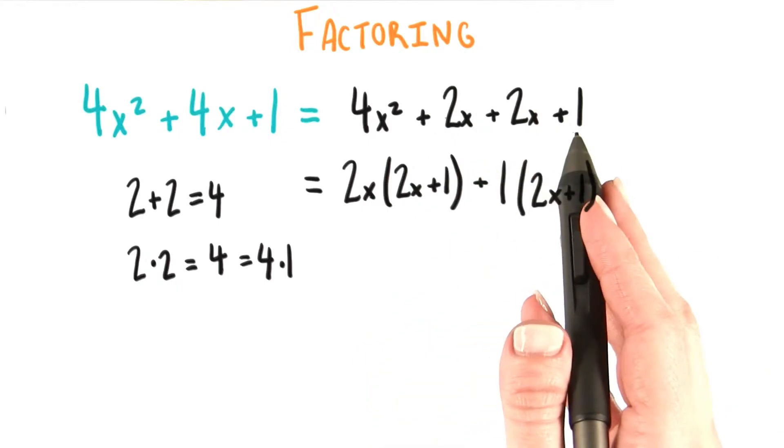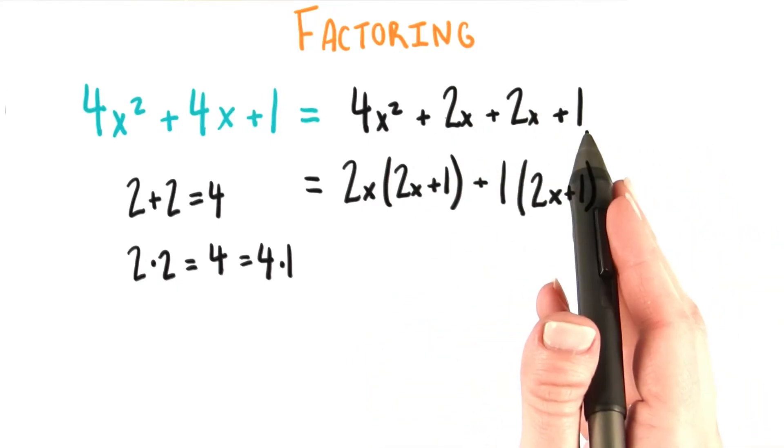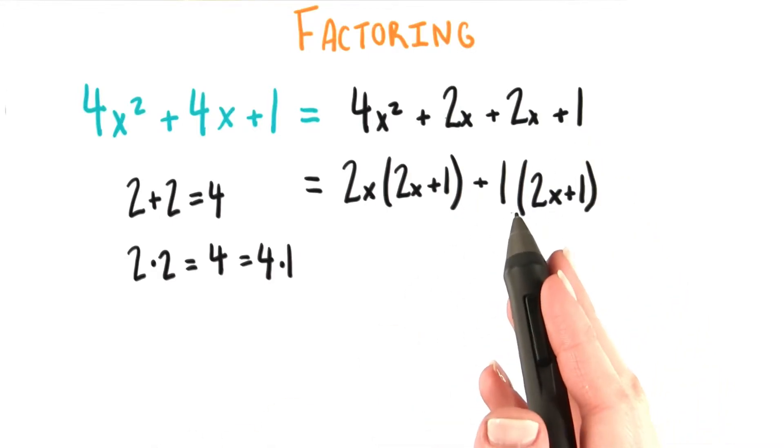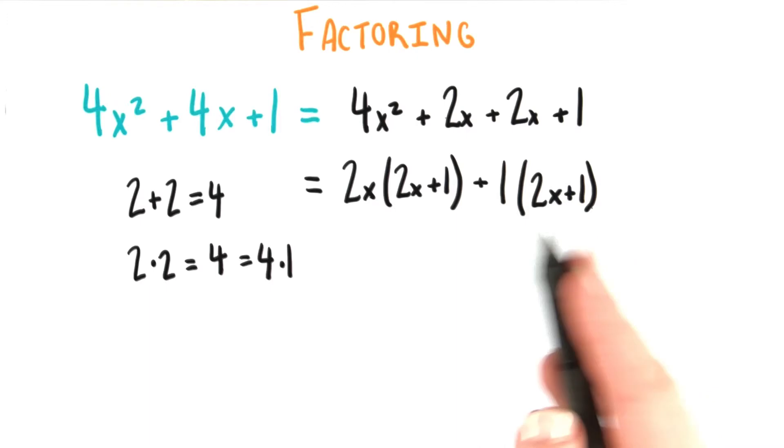but then when we get to 2x plus 1, well, there are no common factors that 2x and 1 have, aside from 1. So that's exactly what we write, 1, and then the last two terms, 2x plus 1.